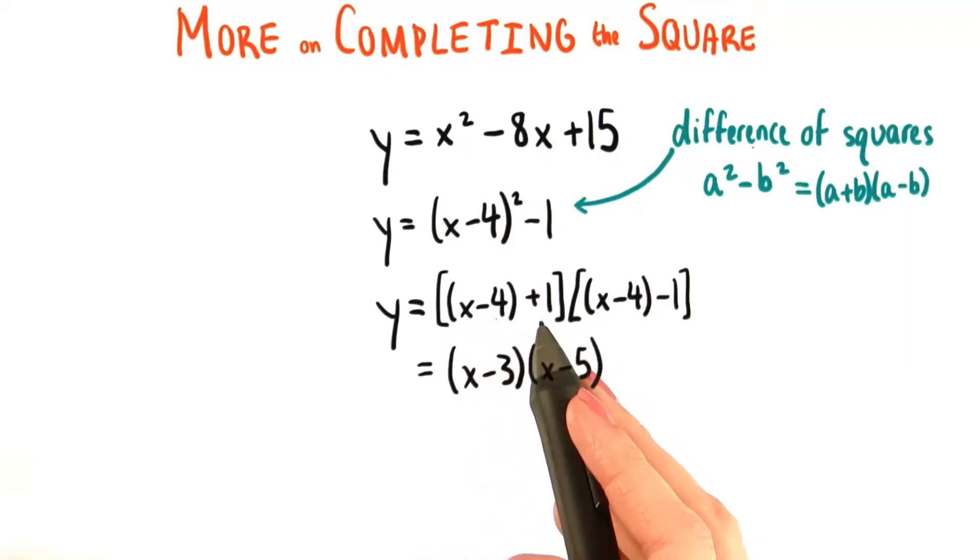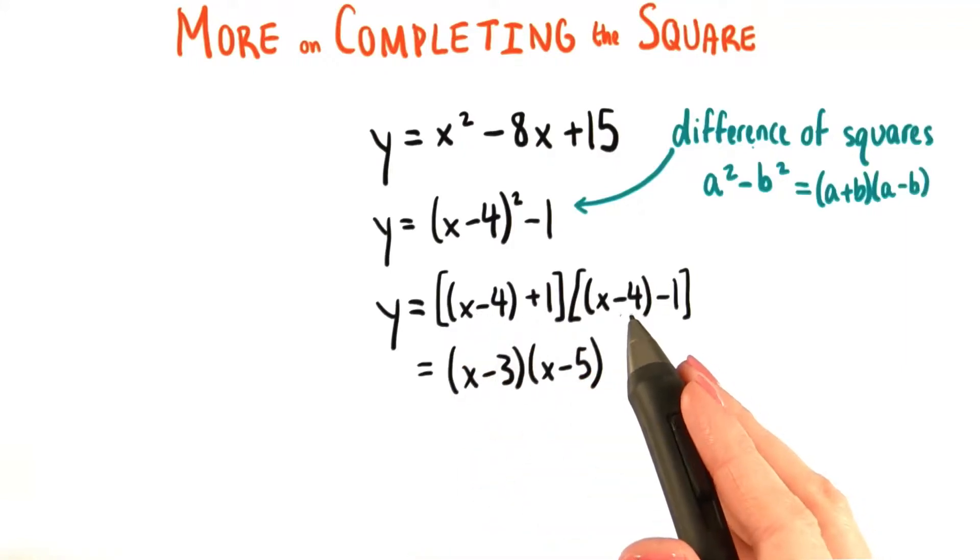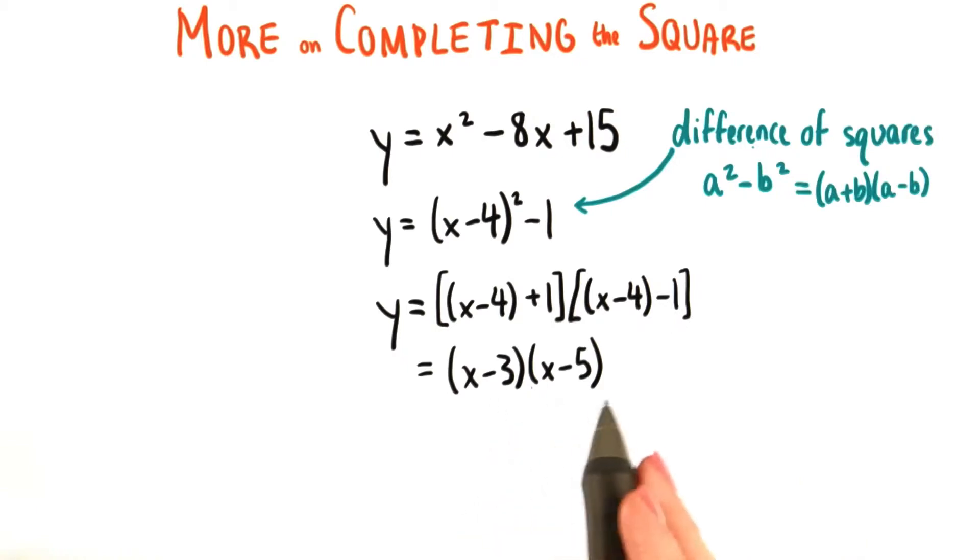a plus b is x minus 4 plus 1, and a minus b is x minus 4 minus 1. Simplifying, this gives us the quantity x minus 3 times the quantity x minus 5.